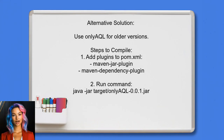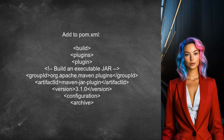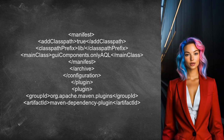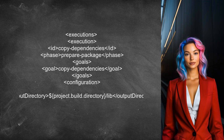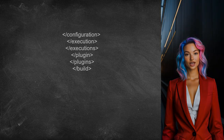Another alternative solution is to use a tool called OnlyAQL. Although the link to the compiled version is broken, you can compile and run it yourself using Java. To do this, add two plugins to your pom.xml file and run a specific command. Include the build configuration in your pom.xml to create an executable jar and manage dependencies effectively.